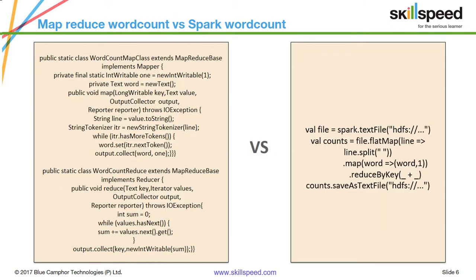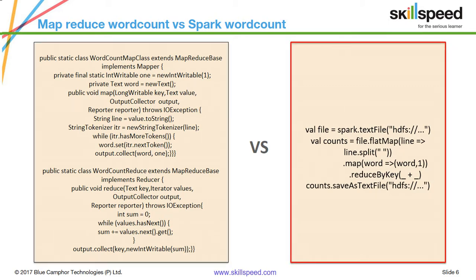I've explicitly included this slide to show you the advantage and conciseness of Spark programming. On the left-hand side you can see the same word count program written in Java — a MapReduce program that runs on a Hadoop cluster. On the right-hand side you can see the equivalent Spark Scala code. Look at the difference in the number of lines of code. This is one reason people love Spark: application development time is considerably reduced, code maintenance is very easy, and even debugging becomes easy.